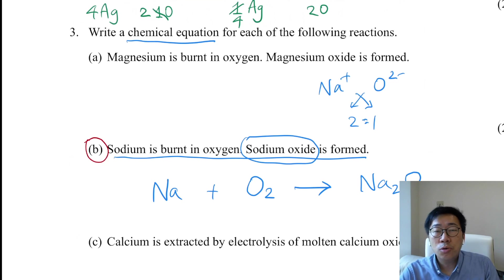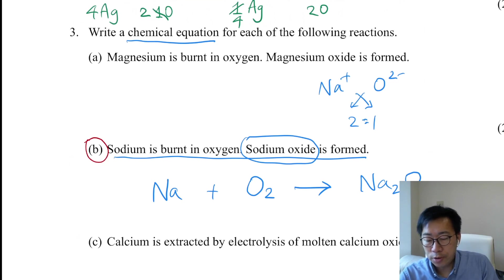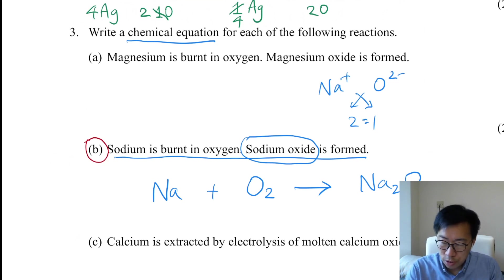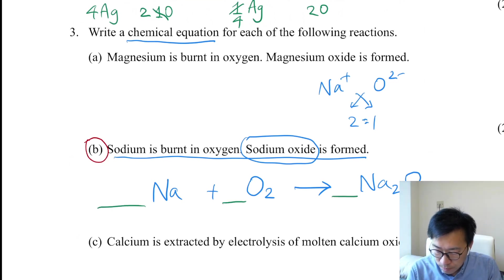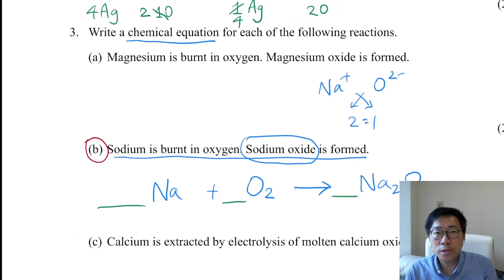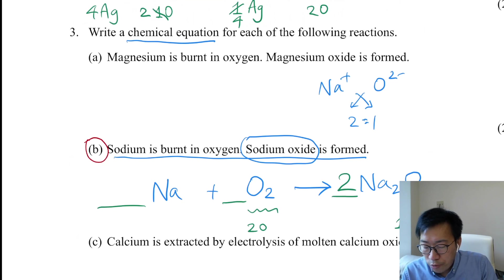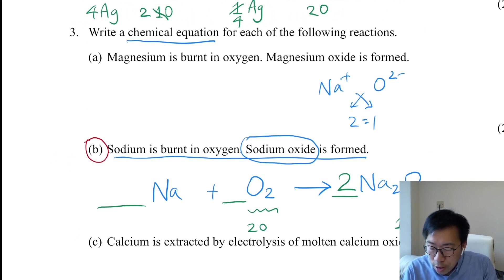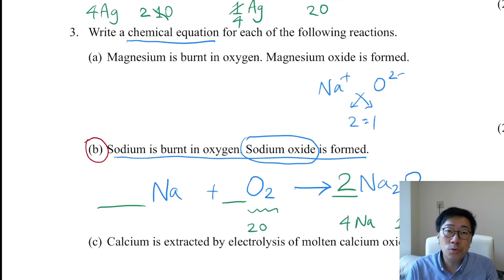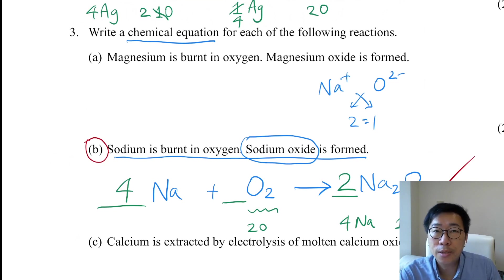You have now put down all the chemical symbols and formulas for the reactants and products. The next step is to balance the chemical equation. Check the number of O atoms: on the left, two O atoms; on the right, only one. So put a 2 before Na2O. After doing that, the 2 multiplies the whole formula Na2O, giving 4 Na atoms on the right, so put a 4 before Na on the left. The equation is now balanced.